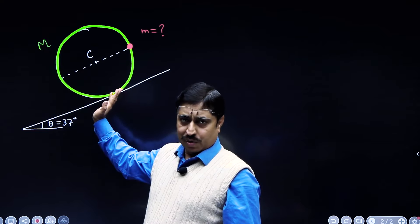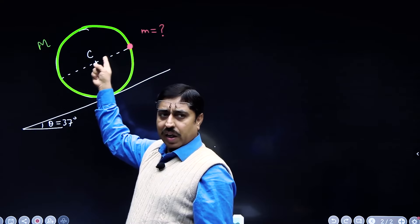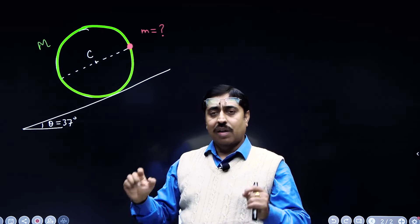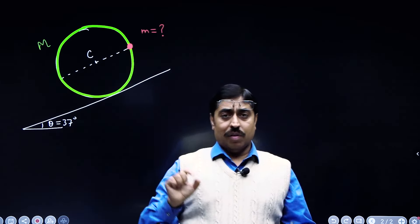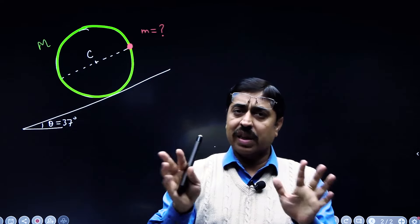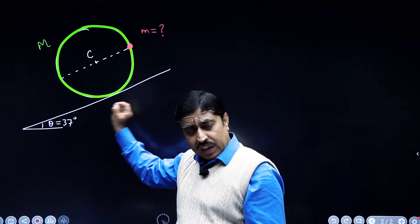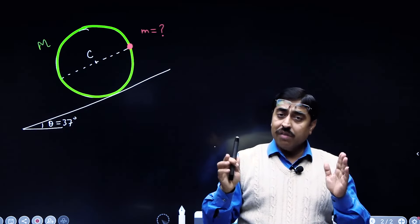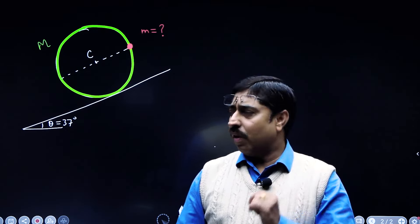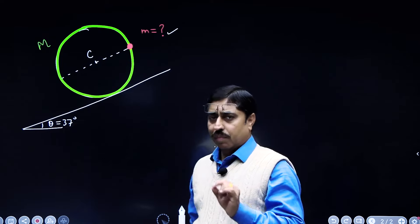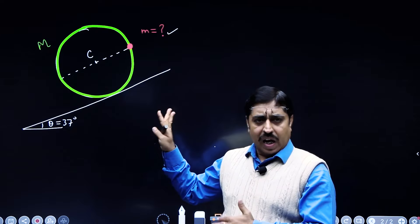In this particular position, when the diameter through this particle — this dotted line — is parallel to the incline, you release the ring and it stays there, it remains in equilibrium. If you leave this ring in this position, it remains in equilibrium — that is the given condition. Now you have to find the value of small m, the mass of the red colored particle, so that this can happen.